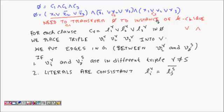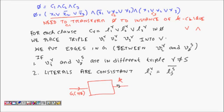Now I need to transform this 3-CNF problem into a k-Clique problem. The k-Clique solver is a black box that takes a graph — some vertices and edges — and tells you whether it contains a clique of size k. So I have a Boolean function φ, and I must convert it into a graph, pass that graph to the black box, and then translate the yes/no output to determine whether the circuit is satisfiable.